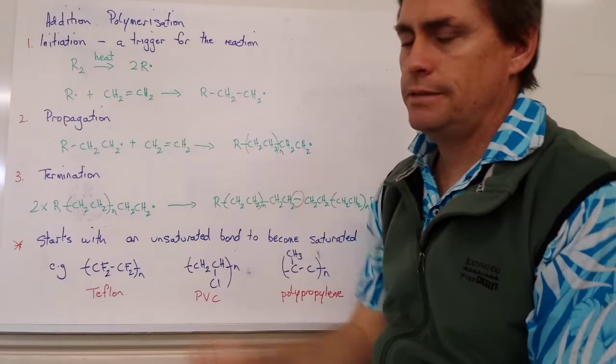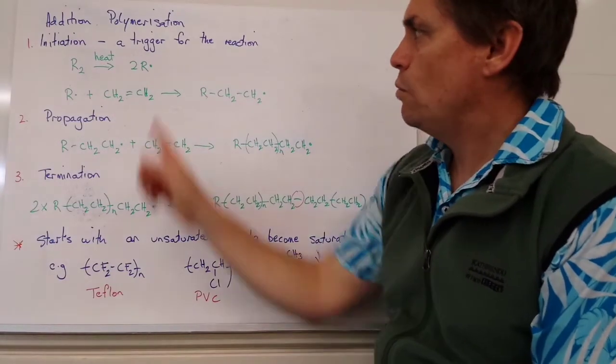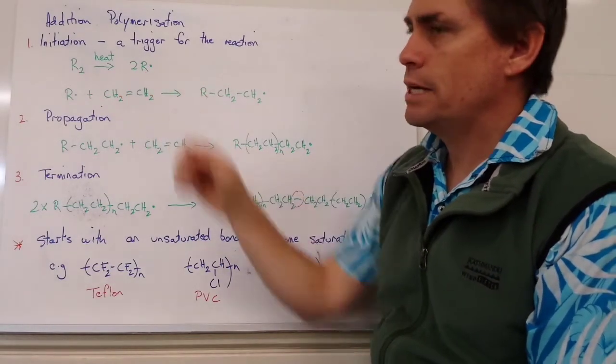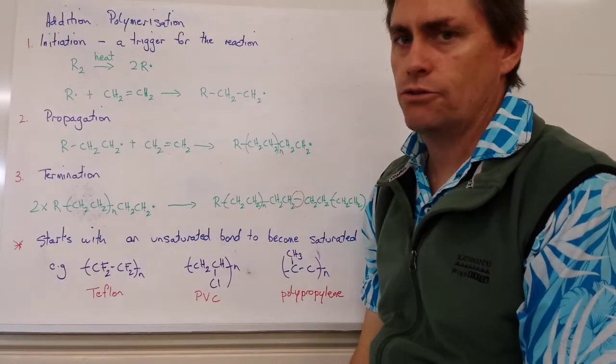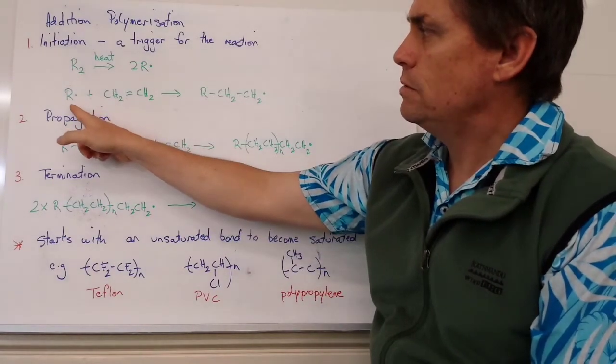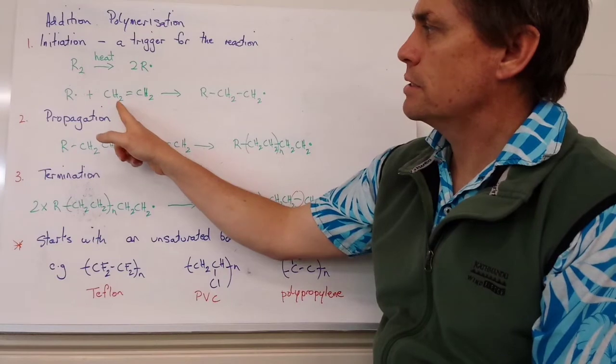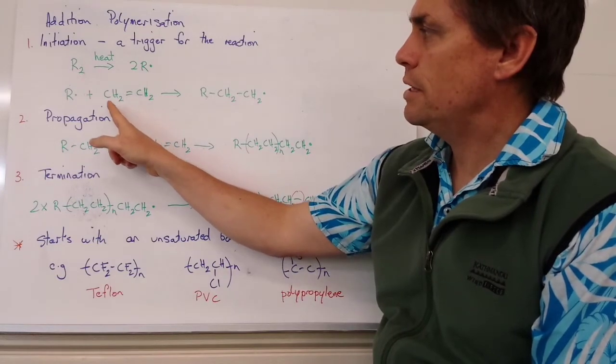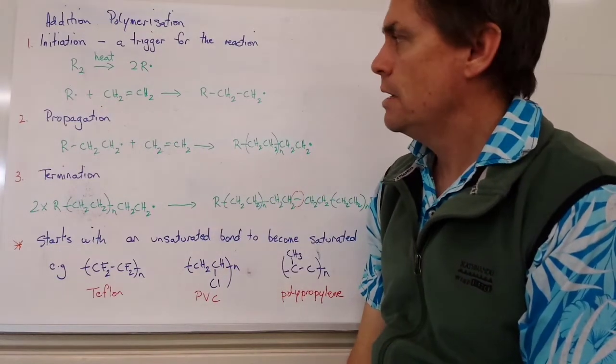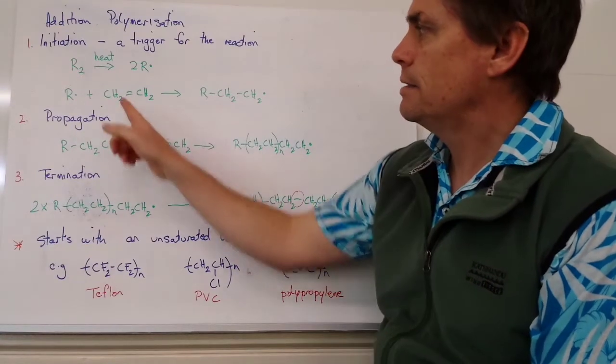So the R indicates that we've got a radical with one extra, or a free electron. And this radical is then put in the presence of our monomer unit. In this case we've got ethene. And it reacts readily with that double bond.